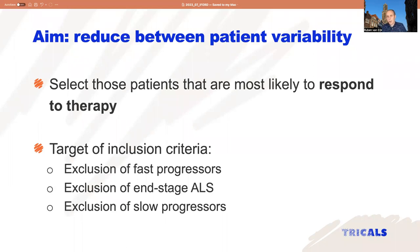Another important category is the exclusion of very slow-progressing patients, because these are the patients that cause all the variability and make it very complicated to measure treatment effects in clinical trials. If a patient doesn't decline during 12, 18, or 24 months, we are also not able to detect whether a drug delays disease progression.